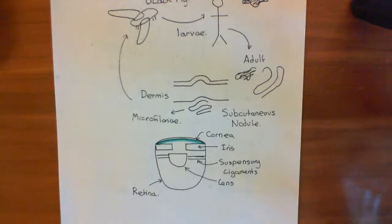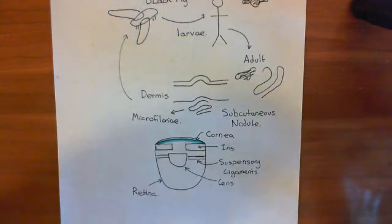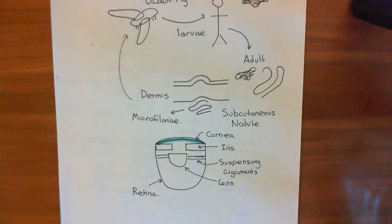That's why onchocerciasis — this infection with Onchocerca volvulus — leads to river blindness.